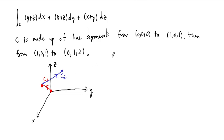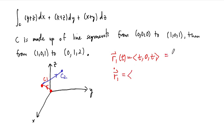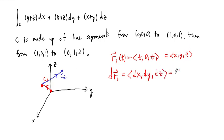So let's start with C1. C1 starts at the origin. We saw in our last example that line segments starting at the origin are very easy to parametrize. So R1(t) = (t, 0, t), and dr1 = (dx, dy, dz) = (dt, 0, dt).